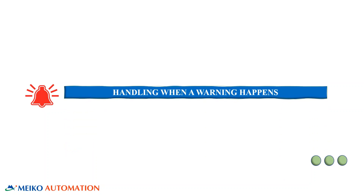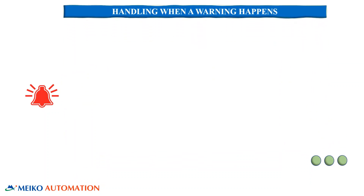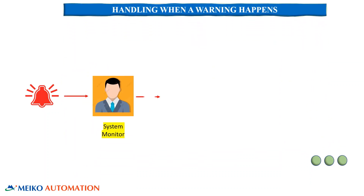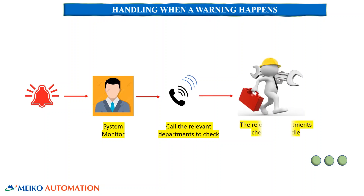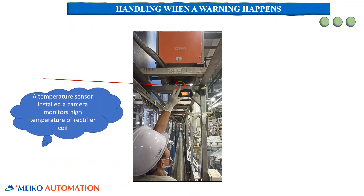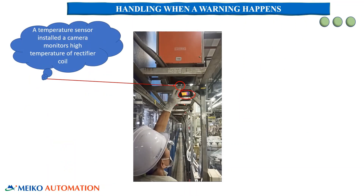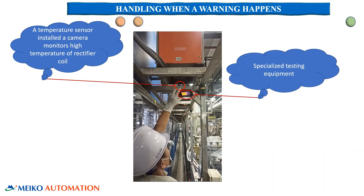Next, let's go through the alarm handling process. When an incident occurs, the operator contacts the relevant department to go to the scene and check the equipment for abnormality. The relevant department will proceed to the scene, and engineers will handle the equipment issue that has occurred.